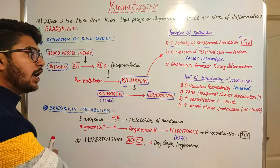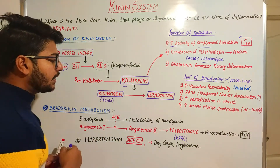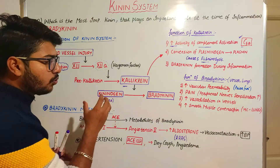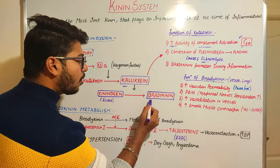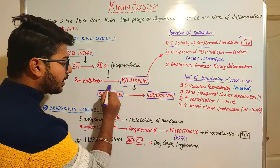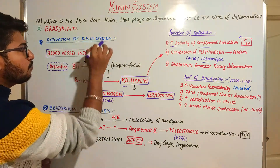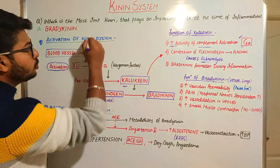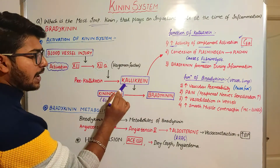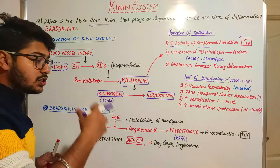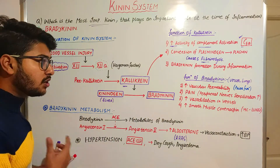Bradykinin is formed during the process of inflammation via kallikrein. Kallikrein converts kininogen — a liver protein present in plasma — into bradykinin. So bradykinin is formed in the presence of kallikrein through the breakdown of kininogen. To summarize: the blood vessel is injured, kallikrein is produced, and that causes the breakdown of kininogen to release bradykinin — the most important kinin released during inflammation.